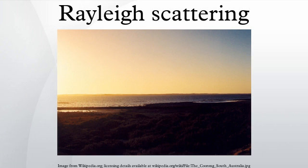Viewed from space, however, the sky is black and the sun is white. The reddening of sunlight is intensified when the sun is near the horizon, because the volume of air through which sunlight must pass is significantly greater than when the sun is high in the sky. The Rayleigh scattering effect is thus increased, removing virtually all blue light from the direct path to the observer. The remaining unscattered light is mostly of a longer wavelength, and therefore appears to be orange.